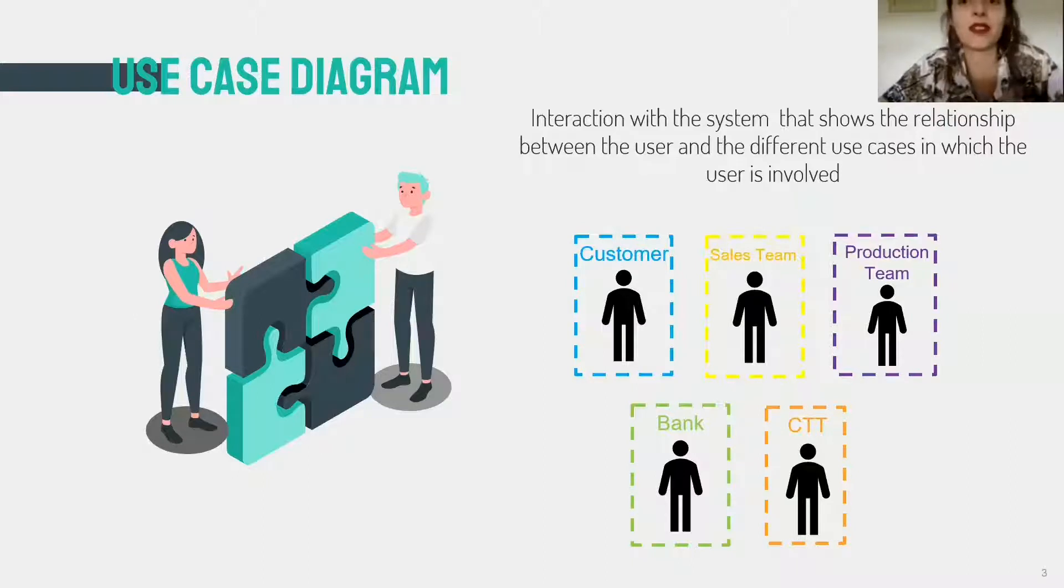Therefore, it was identified five actors that are connected through systems activities as shown. Our actors are the customer, the CTP, the bank, the sales team and finally the production team.